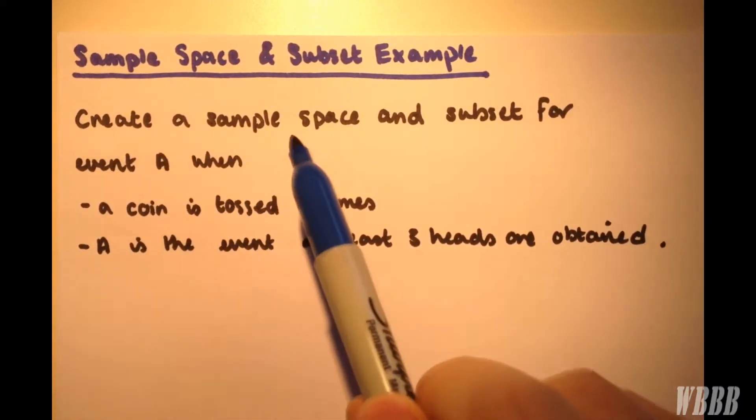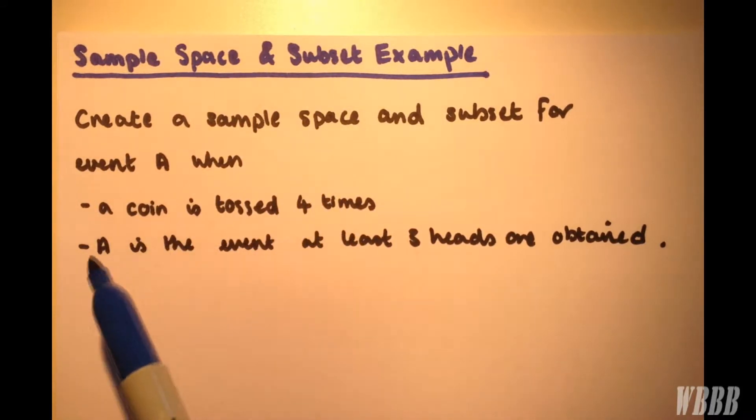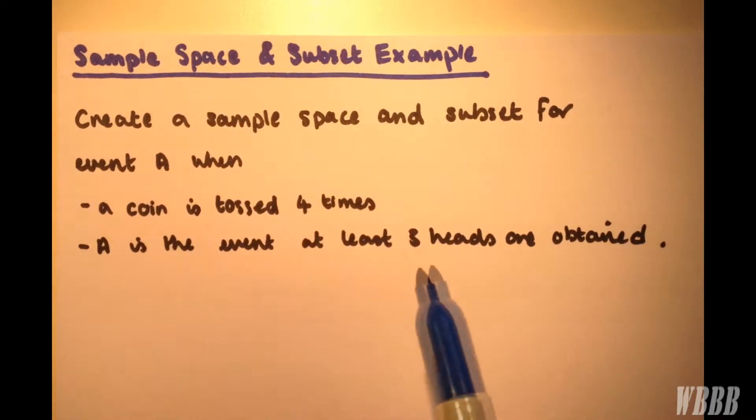So the question is to create a sample space and a subset for an event A when a coin is tossed four times, and event A is the event that at least three heads are obtained.